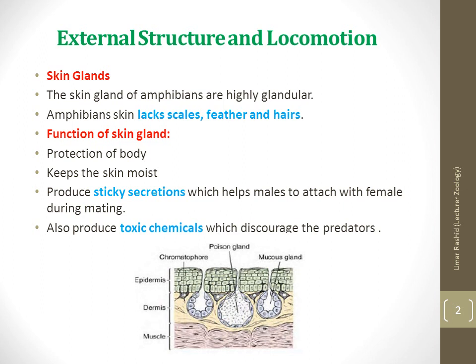The skin glands of amphibians are highly glandular. Their functions include providing protection to the body and keeping the skin moist. The integumentary glands found in the loose dermal tissues include small mucus glands which produce mucus that acts as a waterproofing material on the skin surface, and granular glands — also called poison glands — which produce a whitish watery poison that acts as an irritant to predators.